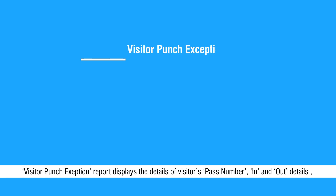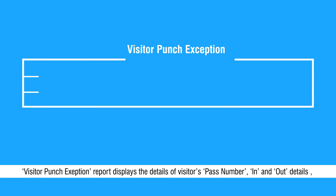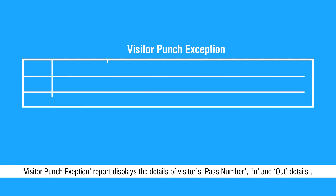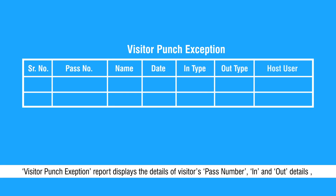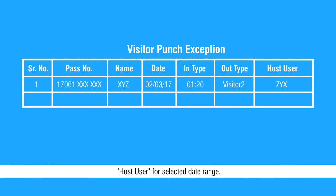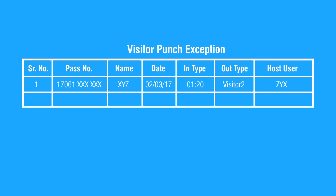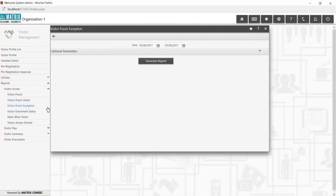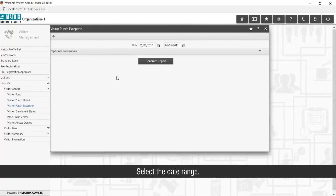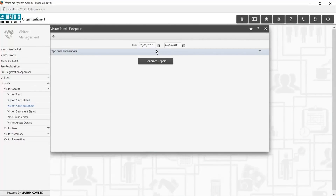Visitor Punch Exception Report displays the details of the Visitor's Pass Number, In and Out Details, and Host User for the selected date range. Select the date range to generate the report.